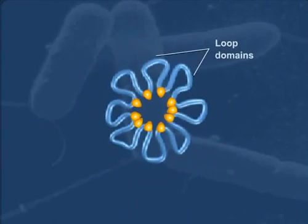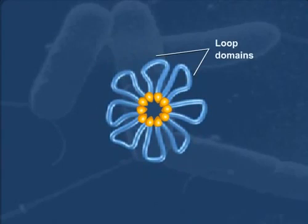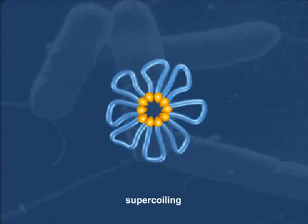The formation of loop domains compacts the DNA about tenfold. Further compaction is accomplished through a process known as supercoiling.